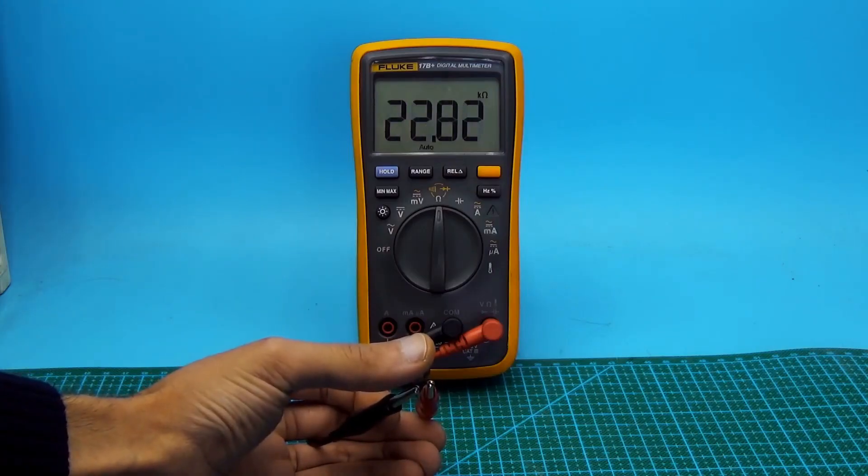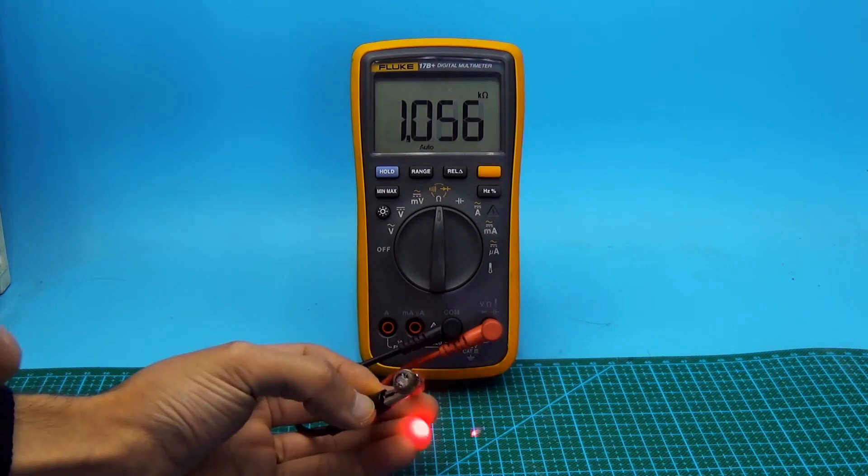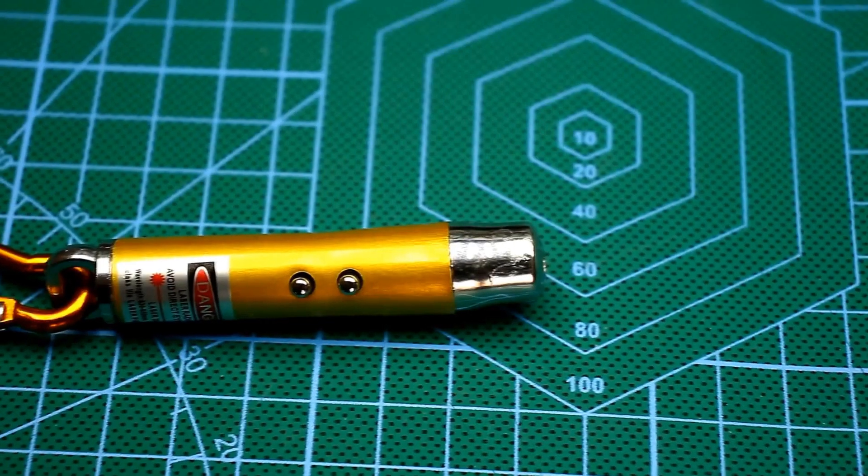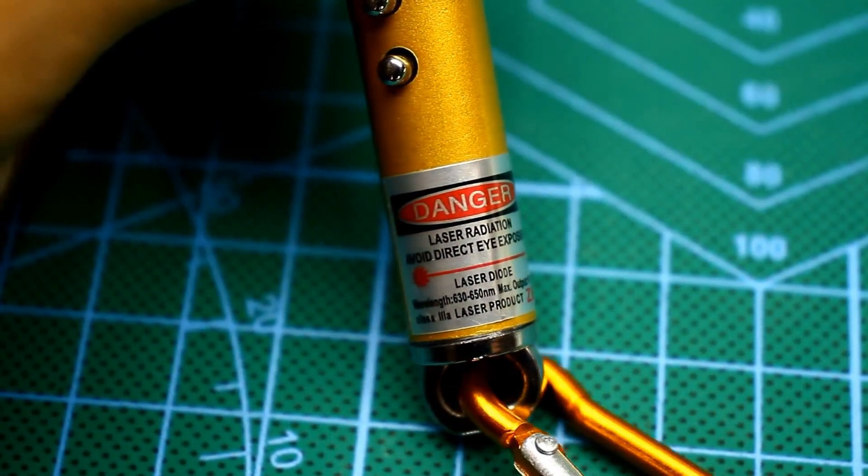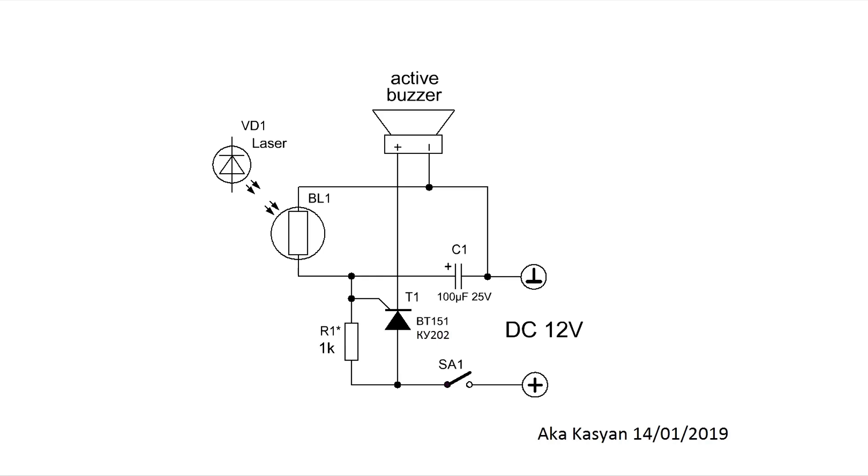It's important that its resistance is several hundred ohms or less when illuminated by a laser pointer. The pointer is the cheapest one. For this circuit, the choice of power source is important. You need to use constant sources with minimal output ripple. It's better to add an electrolytic capacitor to the input of the circuit. It will smooth out the power supply ripples and protect the circuit from false triggering.